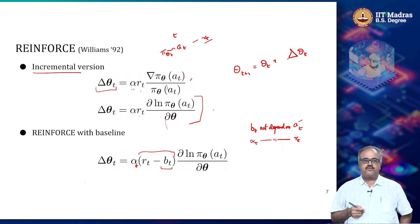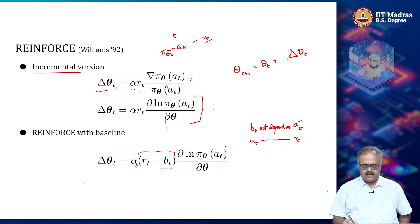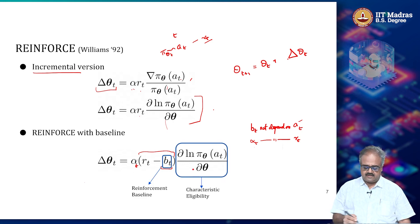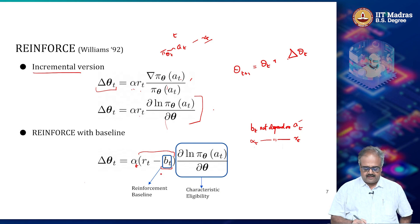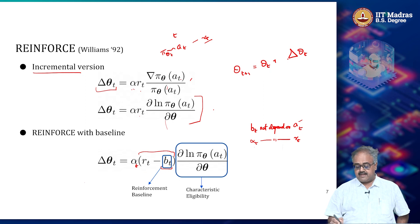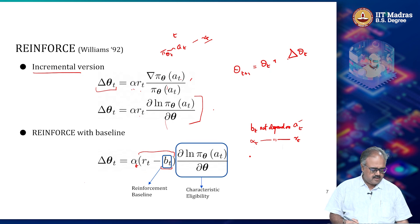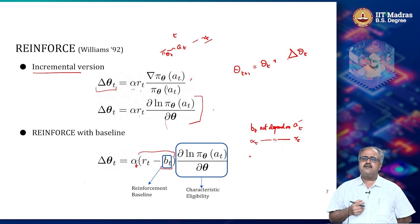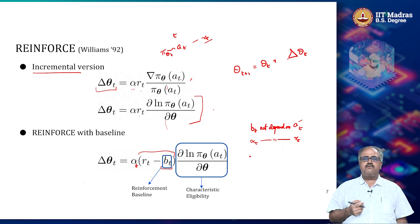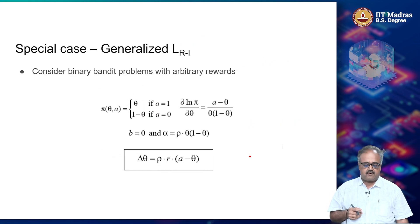We looked at the REINFORCE approach due to Williams. Basically, you look at what is called the characteristic eligibility, which is the derivative of the log of the probability according to theta, and then you could potentially have a reinforcement baseline that does not depend on the action. Before we move on, I will show a few examples of how this approach converts to update rules and how it is a class of rules that can be looked at as policy gradient approaches.